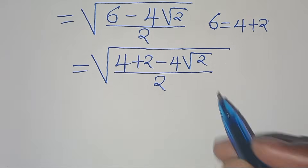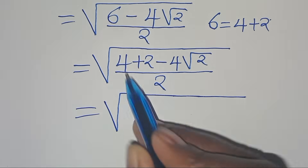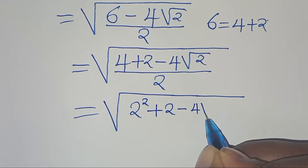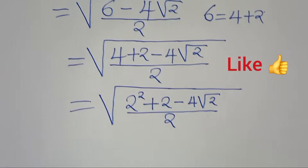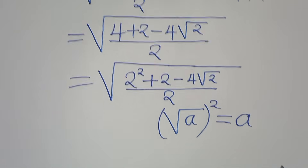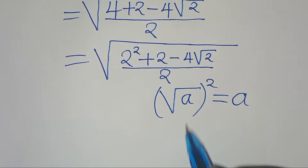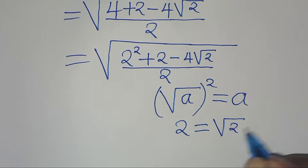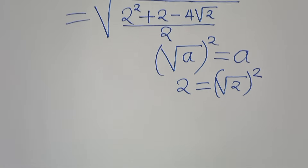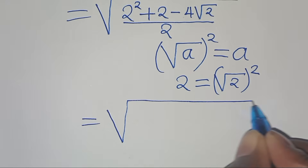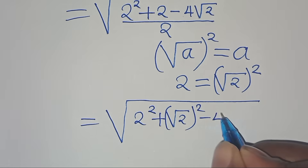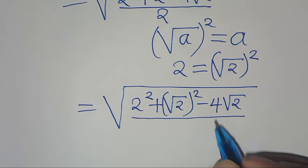Now if we have the square root of 2, then plus 2, plus 2 minus 4 square root of 2, everything divided by 2. If we have the square root of 2, this is the same thing as a. This implies that we can express 2 as the square root of 2 raised to the power of 2. So let's substitute 2 with square root of 2 to the power of 2. So we have the square root of 2, plus square root of 2 raised to the power of 2, minus 4 square root of 2, everything divided by 2.